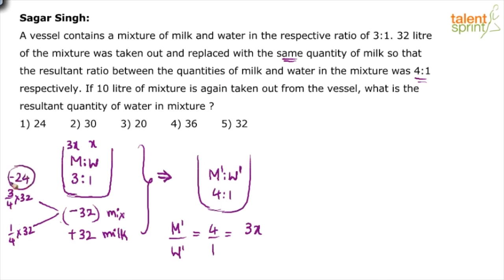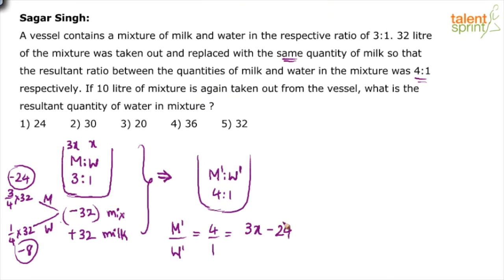So we are removing 24 liters of milk and 8 liters of water. Initial milk was 3x, from which we remove 24 and add 32 liters of milk: that gives 3x - 24 + 32. For water, initial was x, from which 8 has been removed and no water was added, giving x - 8.